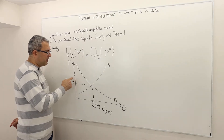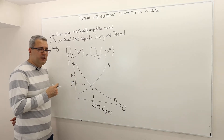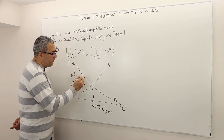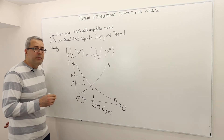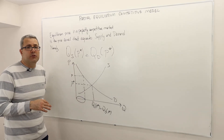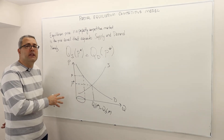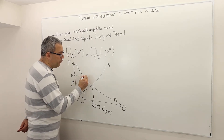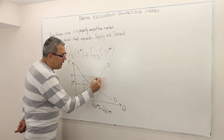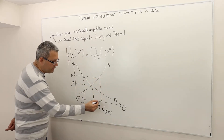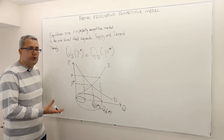Let's suppose the market price is not P*, but something above this level. Let's call it P. If this is really the market price, if you look at the demand curve, only this many consumers will be willing to pay this much money for this good. What about producers? Because the price is very good, there's going to be a lot of producers who would like to produce this good — this many firms will actually want to produce.